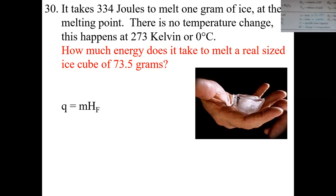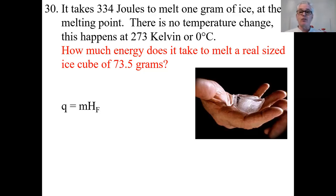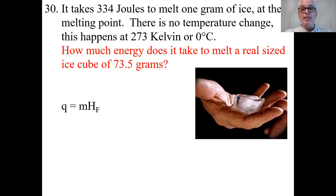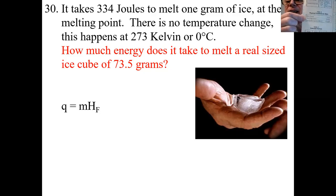We have an ice cube and we want to melt it. How much energy does it take? The energy is called Q — that's the variable, the amount of heat in joules. The amount of energy equals the mass times a constant. What is that constant? H of F is the heat of fusion constant, which is in table B.